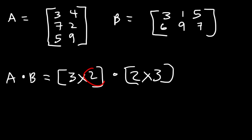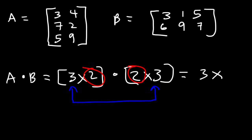Because the number of columns in A equals the number of rows in B, we can multiply matrix A by B. The size of the resultant matrix AB will be a 3 by 3 matrix.